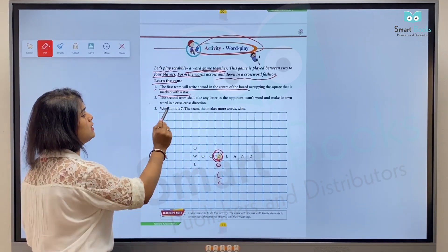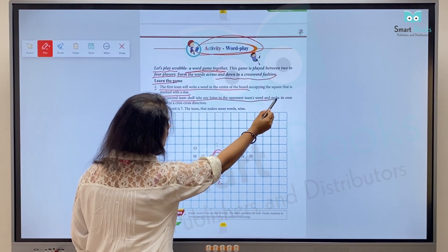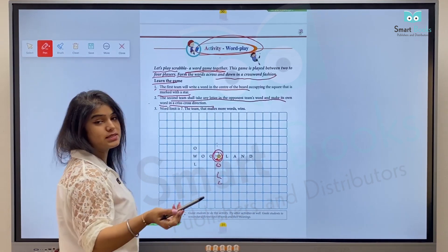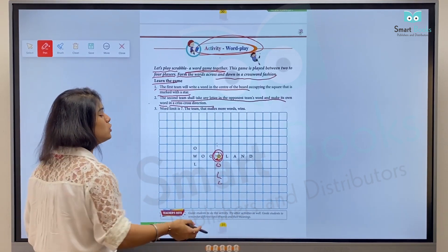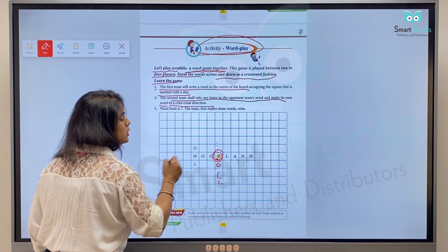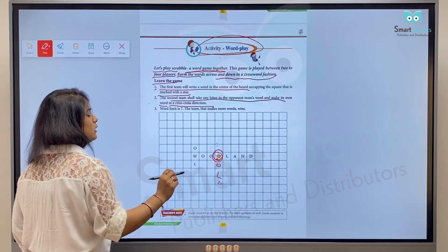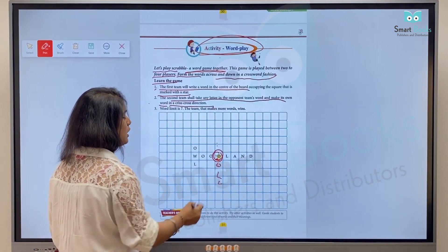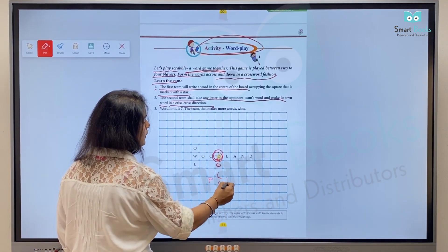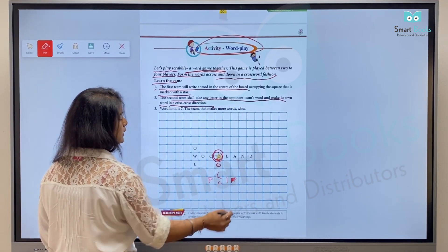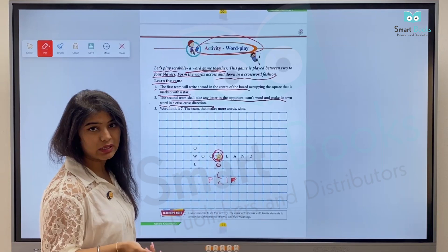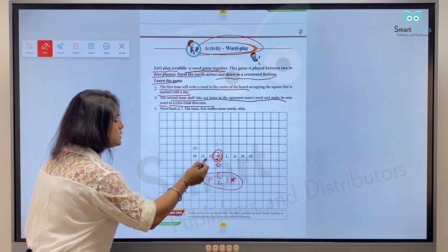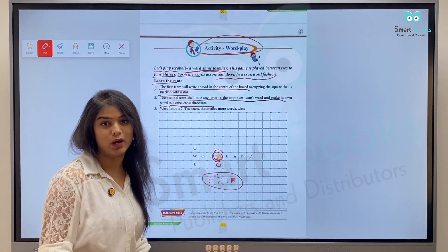Second: The second team shall take any letter in the opponent team's word and make its own word in a crisscross direction. The next opponent team has to choose any one letter from your word and fill up the rest to form a new word. For example, if you took the letter 'L' to make 'flip', then your second opponent team has to include one letter from this word and form a new word in the cross direction.